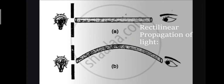There is a property of light: light always travels in a straight path. Light rays never bend — they always travel in a straight path. This property of light to travel in a straight path is called rectilinear propagation of light.